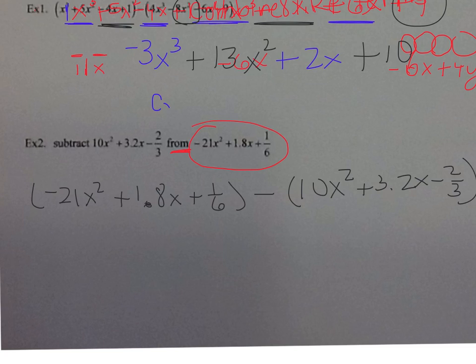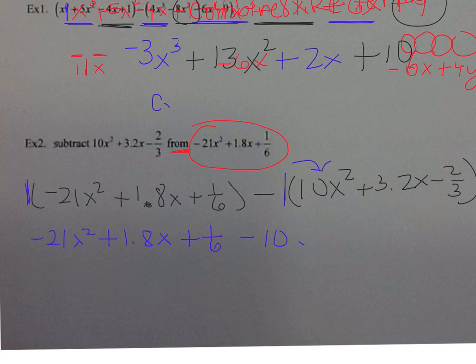Same as before — there's really a 1 here and a negative 1 here, so we distribute. The first parentheses stays the same — that's where 'same, change, change' or 'same, change, opposite' comes from, which you probably learned in middle school. We get negative 21x squared plus 1.8x plus 1.6. Then we distribute the negative 1: everything changes to its opposite. Positive 10x squared becomes negative 10x squared, positive 3.2x becomes negative 3.2x, and negative two-thirds becomes positive two-thirds.